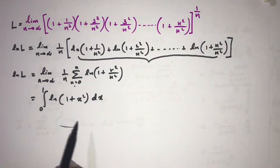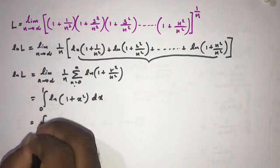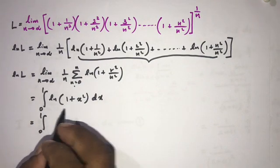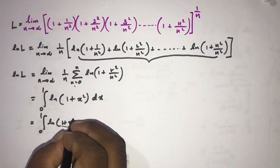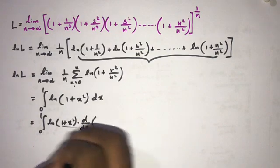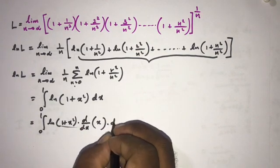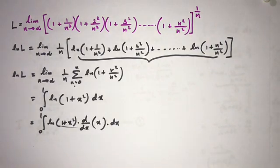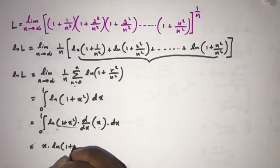Now we have an integral. To evaluate this integral we can use integration by parts. We rewrite the integrand as natural log(1 + x²) times 1, where u = natural log(1 + x²) and dv = dx, so v = x. The derivative of natural log(1 + x²) by the chain rule gives 2x/(1 + x²).